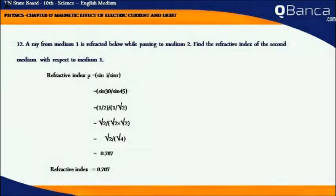A ray from medium 1 is refracted below while passing to medium 2. Find the refractive index of the second medium with respect to medium 1. Refractive index mu equals sin i by sin r.